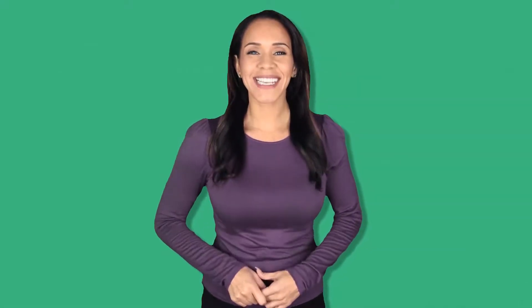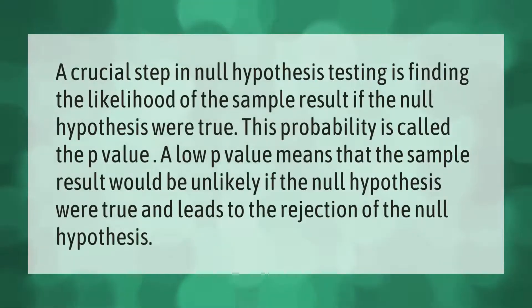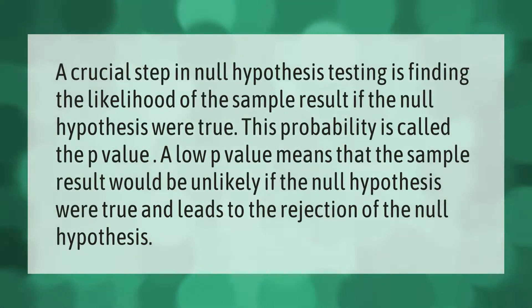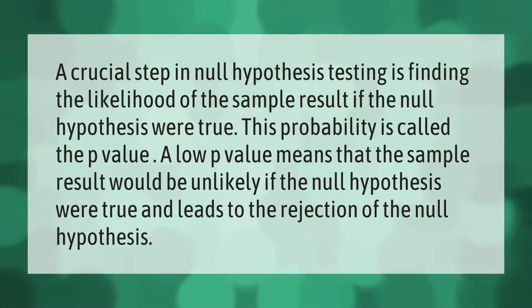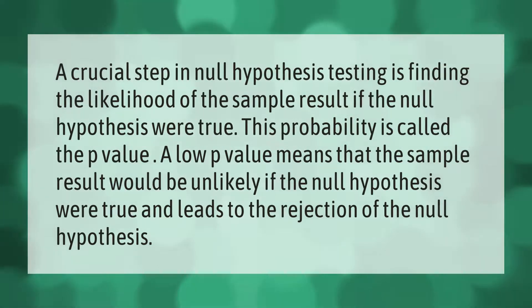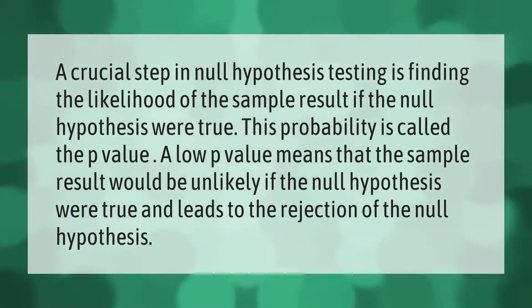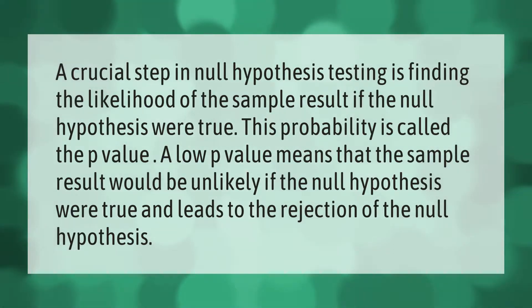A crucial step in null hypothesis testing is finding the likelihood of the sample result if the null hypothesis were true. This probability is called the p-value. A low p-value means that the sample results would be unlikely if the null hypothesis were true, and leads to the rejection of the null hypothesis.